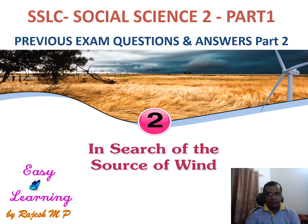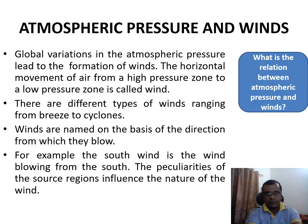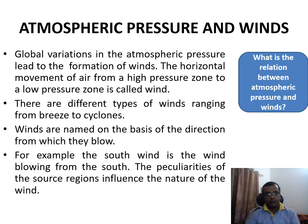This video deals with important questions and solved answers from the SSLC exam point of view. The first question is: what is the relation between atmospheric pressure and winds? Global variations in atmospheric pressure lead to the formation of winds. The horizontal movement of air from a high pressure zone to a low pressure zone is called wind.